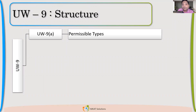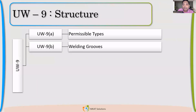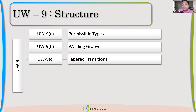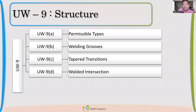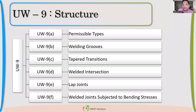Let us see the structure of UW-9, how it is structured, and then we'll talk about each clause in detail. UW-9A talks about what are the permissible types of welds. UW-9B talks about welding grooves. 9C talks about tapered transition. 9D talks about welded intersections and staggering of welds. 9E talks about lap joints. 9F talks about the closing plate — flat head welded with a shell, tube sheet welded with a shell, and how to make that joint.